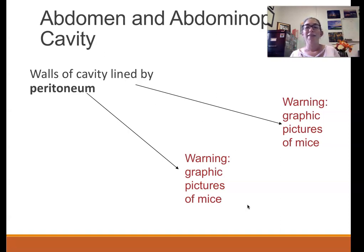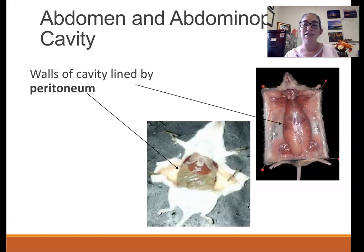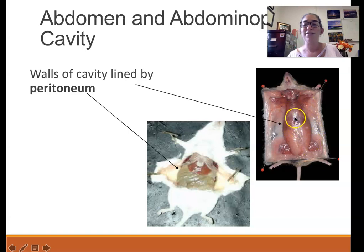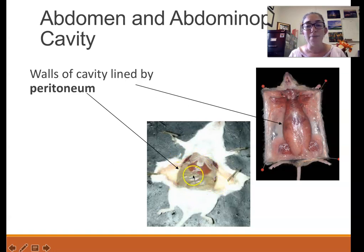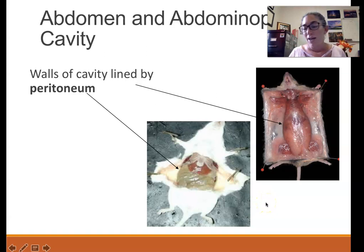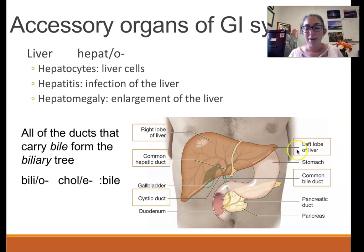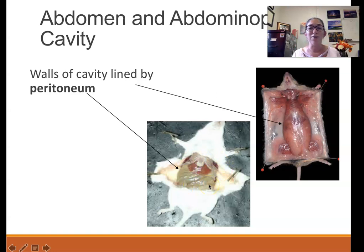The abdominal pelvic cavity is held together by a membrane called the peritoneum. That cavity is lined by this membrane — in the dissection image, you can see it holding all the organs in. In a mouse with a more transparent peritoneum, you can see the liver, and the small and large intestines. The peritoneum produces fluid that keeps the organs lubricated so they don't stick together.